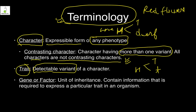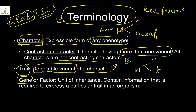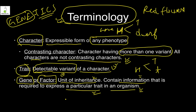A trait is a detectable variant of a character. For example, height is the character; tallness is one trait and shortness is another. A gene is the fundamental unit of genetics — Mendel called it a factor. It is the unit of inheritance, made up of DNA, and contains information required to express a particular trait in an organism.